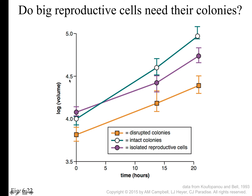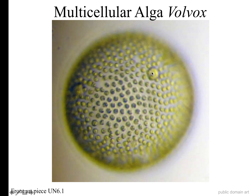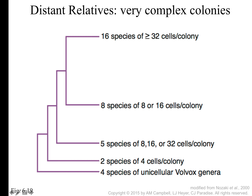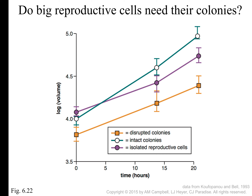If we look at growth rate within a volvox colony, some cells are really big — and those cells have a specialized reproductive function. If we look at an isolated reproductive cell and how fast it grows over time — shown by this purple line — it does grow at a certain rate. But if we take the colony it's in, disrupt it, and look at the cell again, it grows slower. If we leave it intact in the colony, it grows faster. So there is an advantage for the cell being in a colony in terms of growth rate.